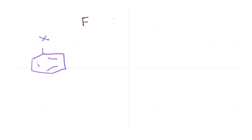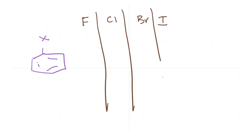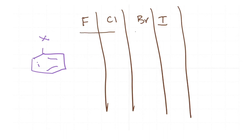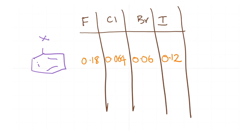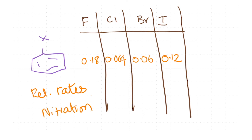When we consider the four compounds — fluoro, chloro, bromo, and iodo — and look at the relative rates of nitration: fluoro is 0.18, chloro is 0.064, bromo is 0.06, and iodo is 0.12. The relative rates of electrophilic aromatic substitution (nitration) are all slower when compared to benzene.